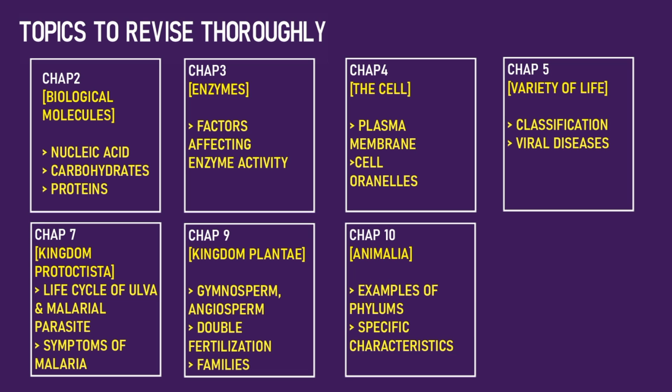Chapter 10, Kingdom Animalia. In animal classification, you need to know which animals are triploblastic, which are diploblastic, which phylum they belong to, the examples of each phylum, and their specific characteristics. For example, in Echinoderms there are pentameres, tube feet, and the water vascular system — the specific characteristics of each phylum should be known.